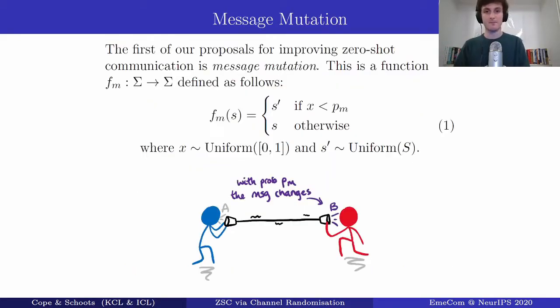Now our first proposal is message mutation. Message mutation is about randomly tampering with the messages that are sent through the communication channel. With mutation probability pm we will change it to something else.